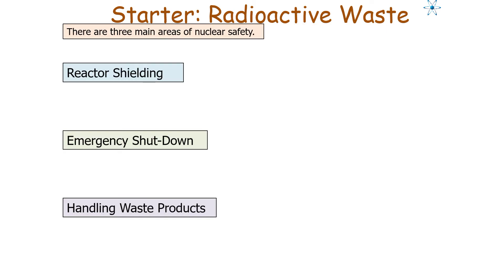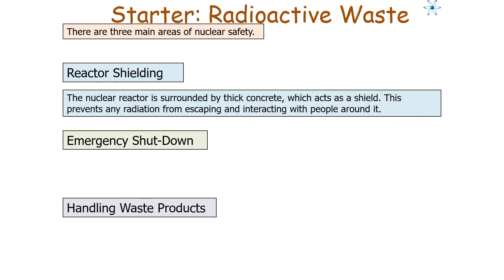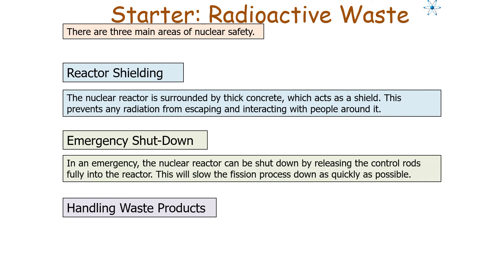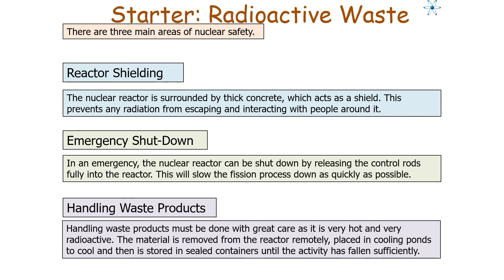There are three key areas of nuclear safety. First, reactor shielding: a nuclear reactor is surrounded by thick concrete, which acts as a shield preventing radiation from escaping. Second, emergency shutdown: the reactor can be shut down by releasing the control rods fully into the reactor, slowing the fission process as quickly as possible. Third, handling waste products: the material must be handled with great care as it is very hot and very radioactive — removed remotely, placed in cooling ponds, then stored in sealed containers until activity has fallen sufficiently.